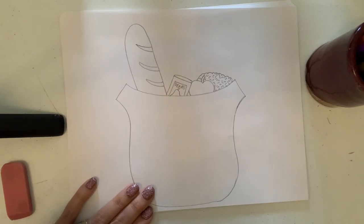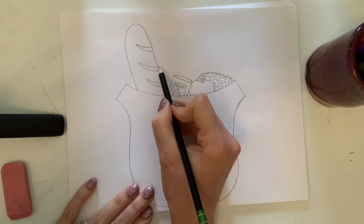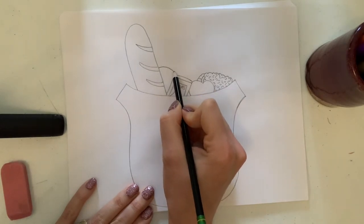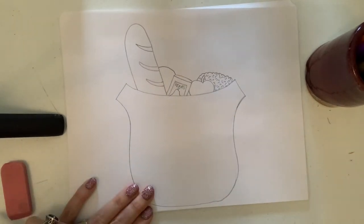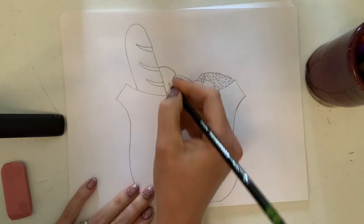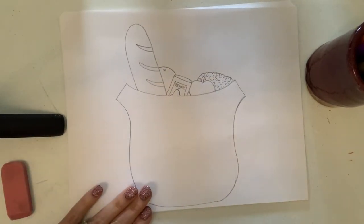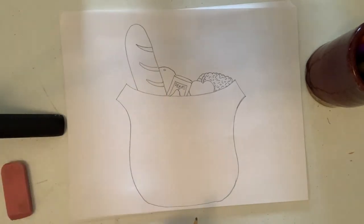Next let's draw an orange. This one's super easy. Start over by your baguette and draw a curved line that comes over and touches your can. Now draw a teeny tiny oval inside where the stem connects to the orange.